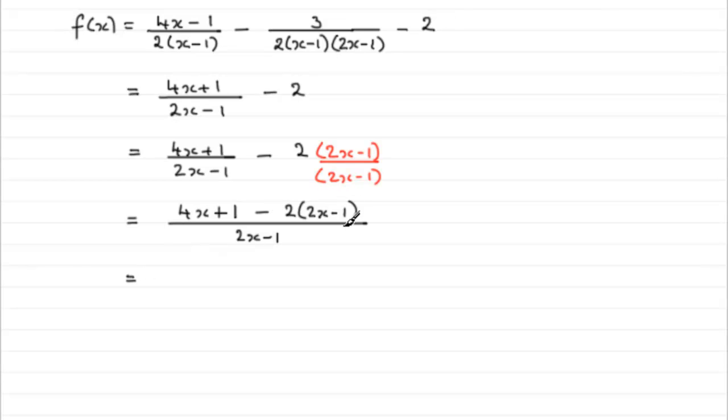So, put it all over a common denominator like that. If we expand this out, then as I was saying, we get 4x plus 1 minus 4x plus 2. So, that's the place you've got to be careful about. And that's over 2x minus 1.